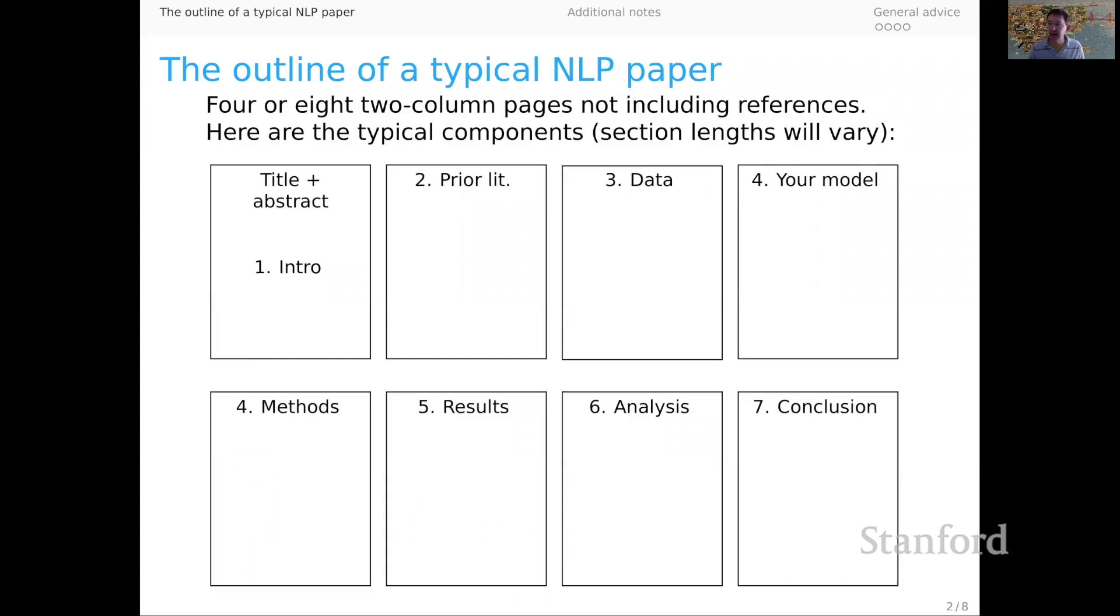To start, let's look at the outline of a typical NLP paper. By and large, these are either four or eight page papers in a two column format that you get from the style sheets. Those lengths don't include the references.